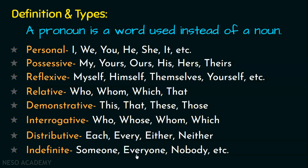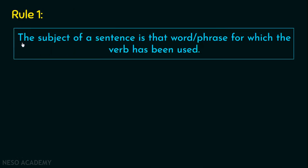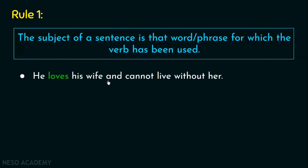I hope the definition and types are clear. We can now move ahead to the rules of pronouns. The first rule says the subject of a sentence is that word or phrase for which the verb has been used. Some say it's the one who is talking; some say it's the one about whom we are talking — but these are vague definitions. The subject is simply that part for which the verb is used or to which the verb refers. For example, in 'He loves his wife and cannot live without her,' the verb is 'loves' and it clearly refers to 'he,' making 'he' the subject.